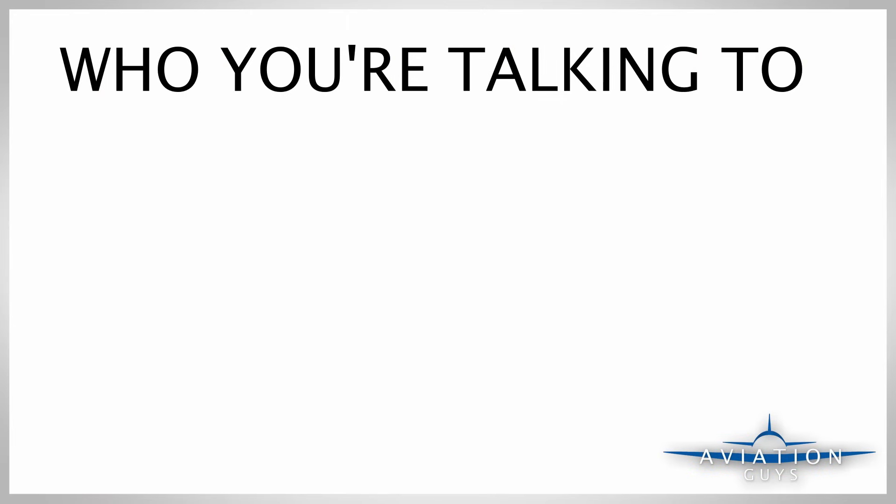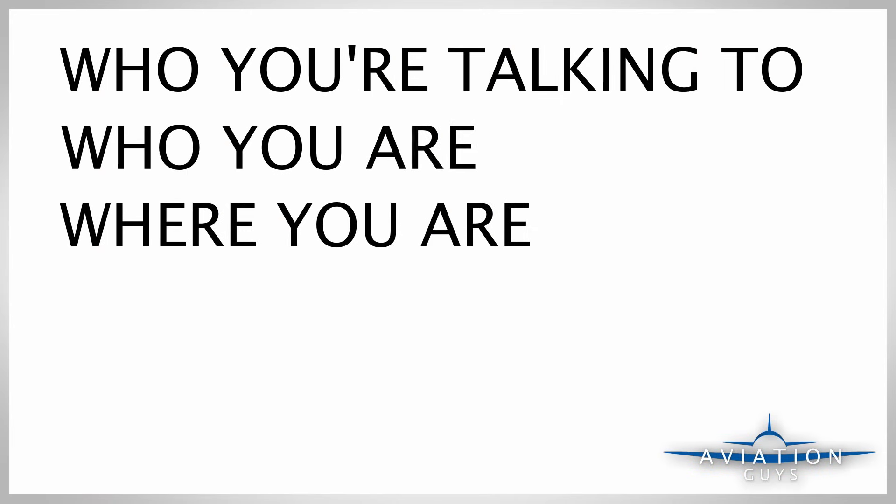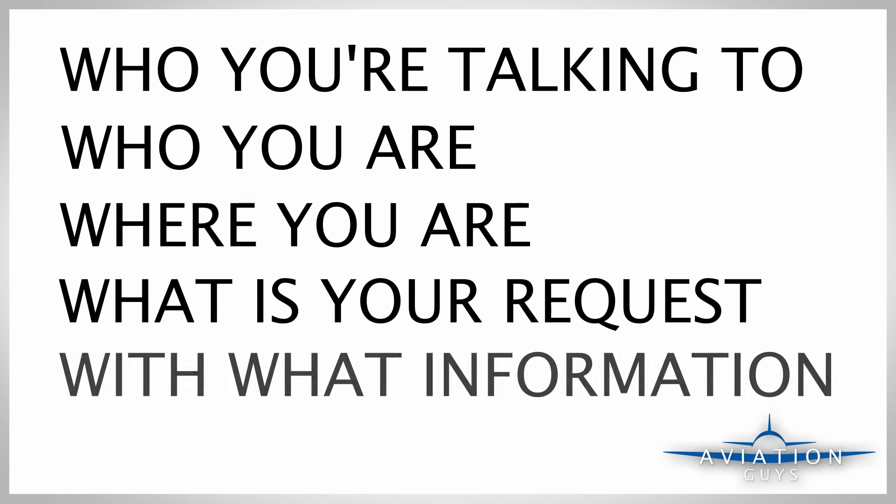Your communication with air traffic control on your initial contact has to include a lot of information. To keep things simple, we're going to use the W's of ATC communication. When you make your initial contact with air traffic control, whether you're in the air or on the ground, it must include five things: who you're talking to, who you are, where you are, what your request and intentions are, and what airport information you have. This is everything ATC needs to give you clearance and instruction. The W's are just a good technique to help you get going.